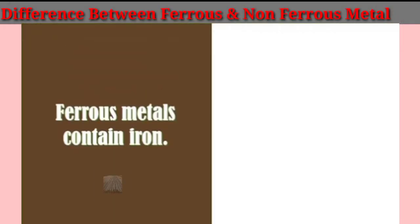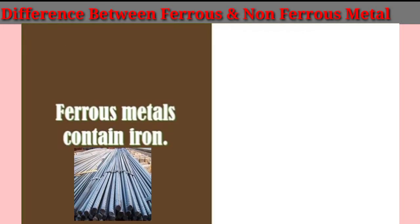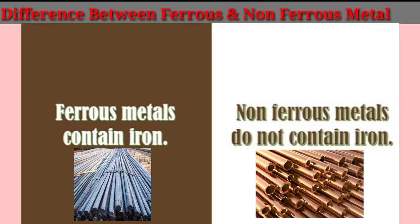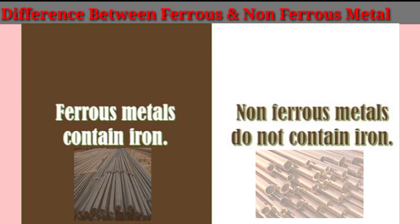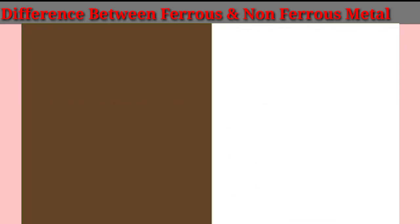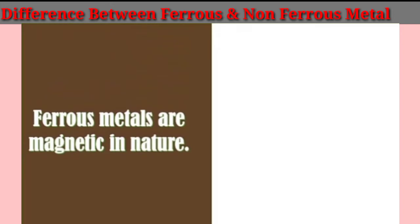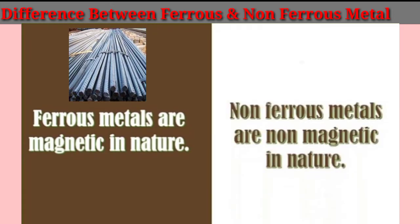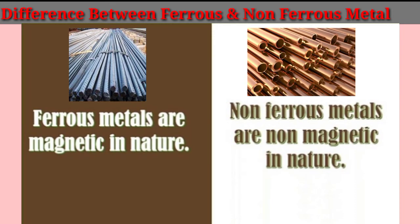Ferrous metals contain iron as a main component, but non-ferrous metals do not contain iron as a main component. Ferrous metals are magnetic in nature, but non-ferrous metals are non-magnetic in nature.